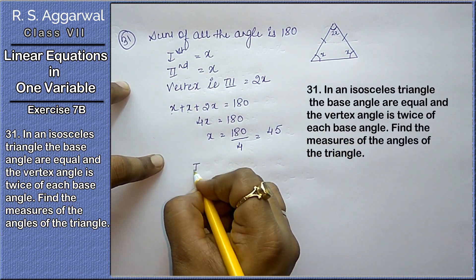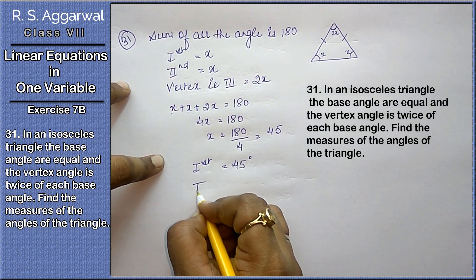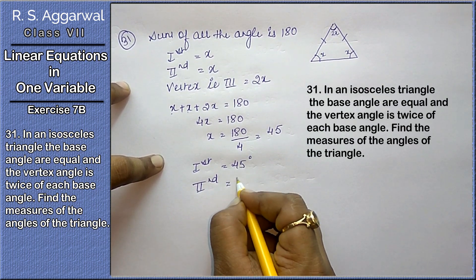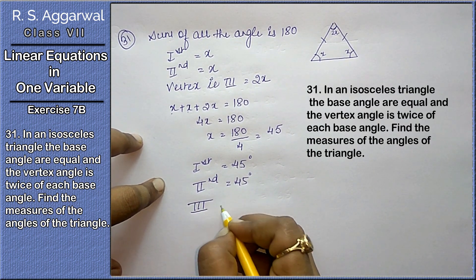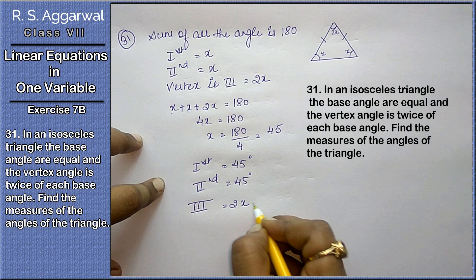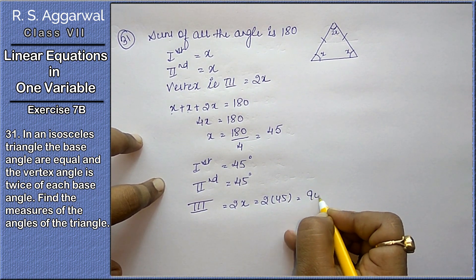So 2x plus x plus x, that is 4x equals to 180 degrees. x equals to 180 upon 4, that is 45. First angle is 45 degrees, second angle is 45 degrees because x, third angle is 2x, that is 2 times 45, that means 90 degrees.